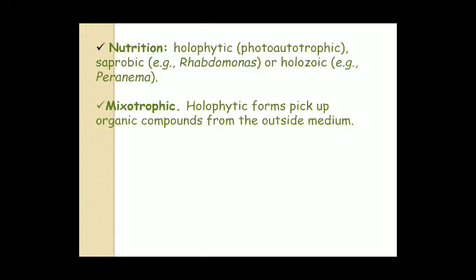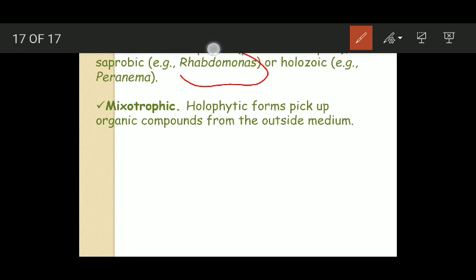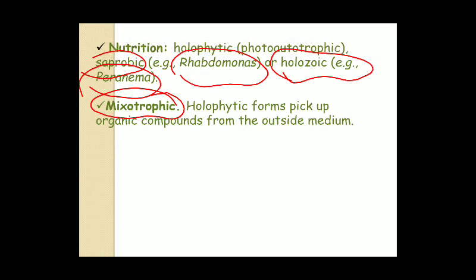Now their nutrition. They are holophytic, that means they are plant-like. They are photoautotrophic because they contain photosynthetic pigments. They manufacture their own organic food material. However, there are some exceptions. For example, Rhabdomonas is saprobic, it is just like fungi. And Peranema is holozoic, it is like animals. It consumes solid organic matter. Some of these euglenoids show mixotrophic mode of nutrition. For example, it has been found that some holophytic forms pick up organic compounds from the outside medium. Besides manufacturing their own organic food material, some holophytes are capable of getting organic food material from the outside medium. That is why they are known as mixotrophic. They show two modes of nutrition, holophytic as well as holozoic.